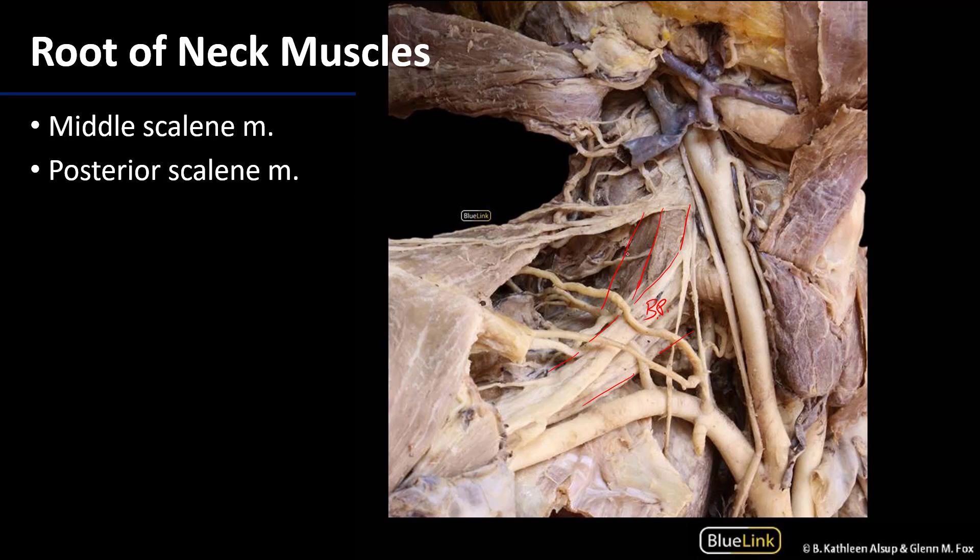The posterior scalene muscle has superior attachments from the transverse processes of C4 through C6 vertebrae and inserts on rib 2, making it unique among the scalene muscles as the only one to attach to the second rib. It is innervated by branches of the ventral primary rami of C6 through C8. Like its counterparts, it can flex the C-spine, but it can also elevate the second rib, which the other two scalene muscles cannot do.